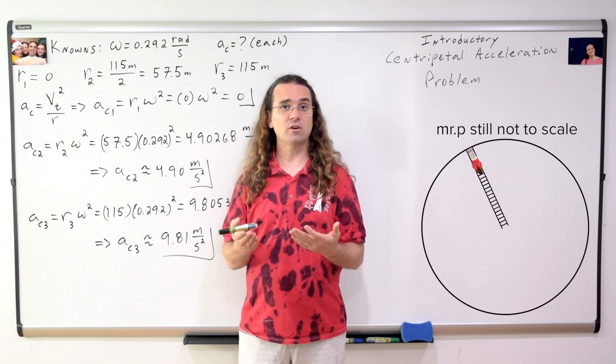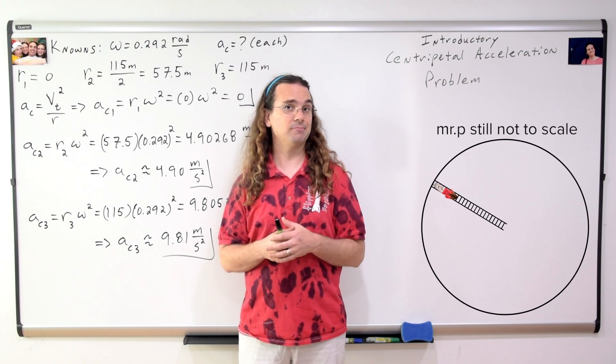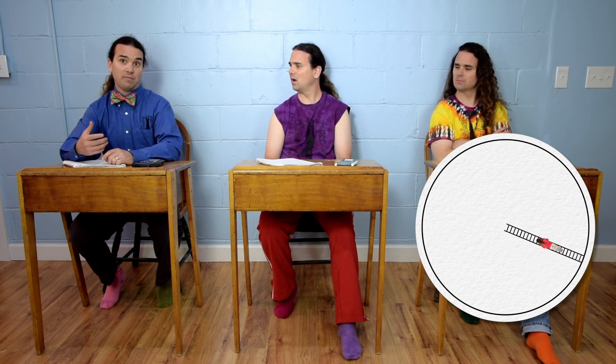Okay, back to our cylindrical space station. What will I feel when I start climbing up the ladder? Well, the radius decreases as you go up the ladder. So, the centripetal acceleration, or the artificial gravity, also decreases.